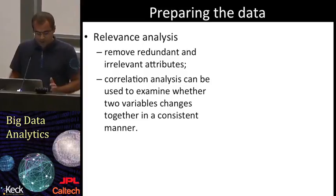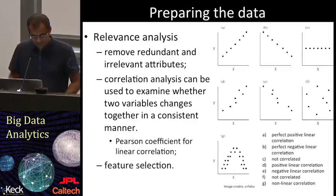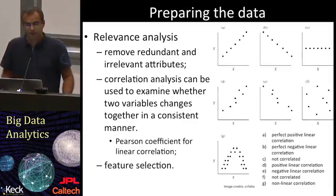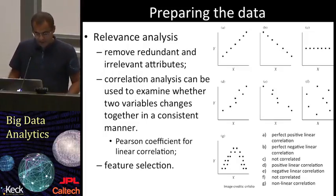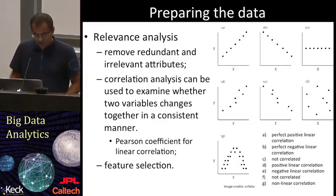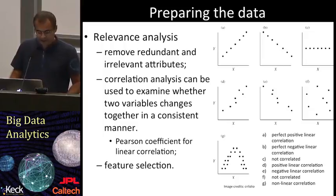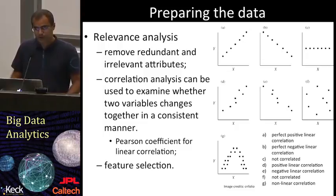A strong correlation between two attributes may suggest that one of them can be eliminated without losing accuracy. The plots on the right show some examples: A and B are perfect correlations, C and F are not correlated at all, D is still linearly correlated even though not perfectly, and G is an example of a non-linear correlation.